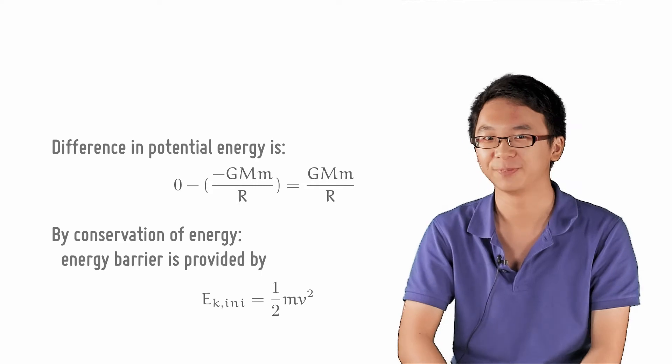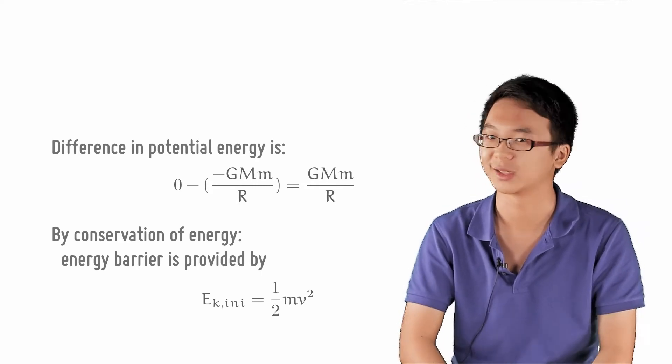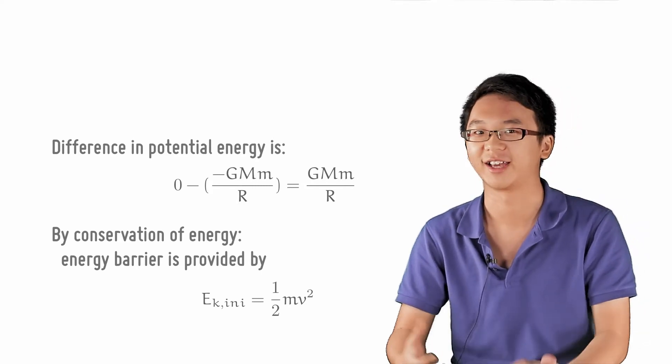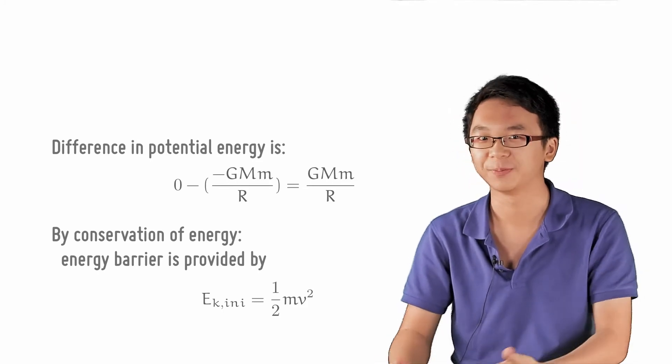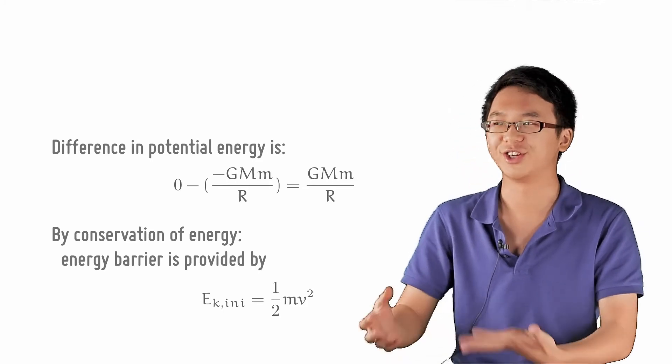By conservation of energy, this potential energy barrier must be provided by the initial kinetic energy, ½mv². By conservation of energy, ½mv² equals GMm over r.